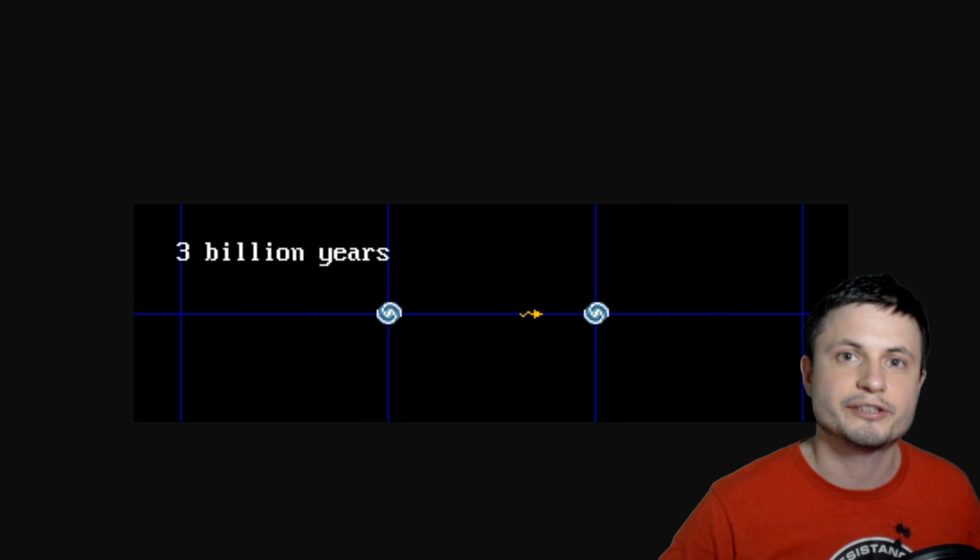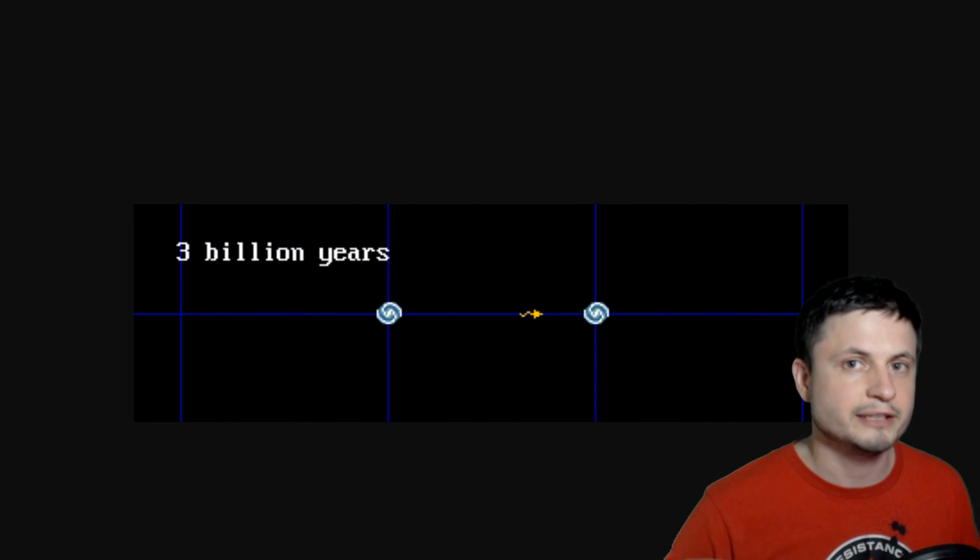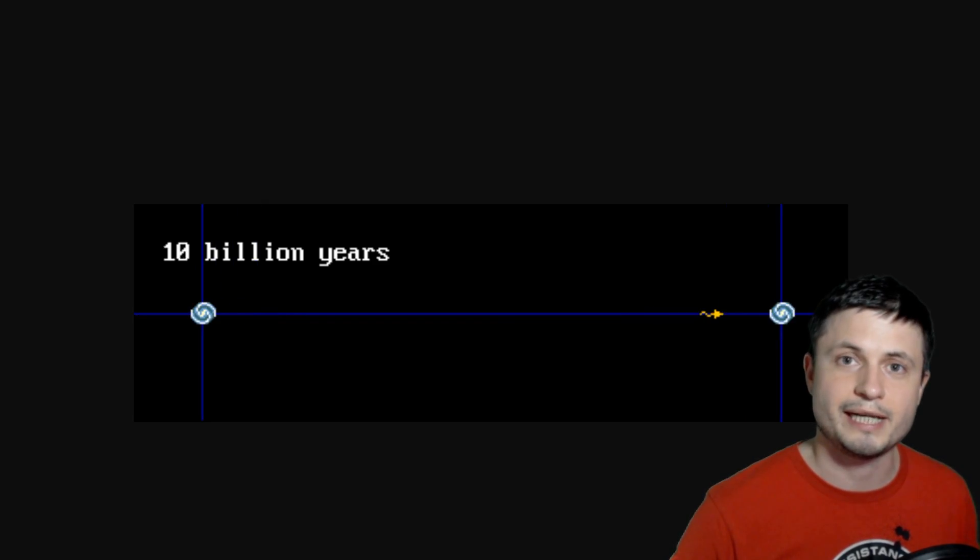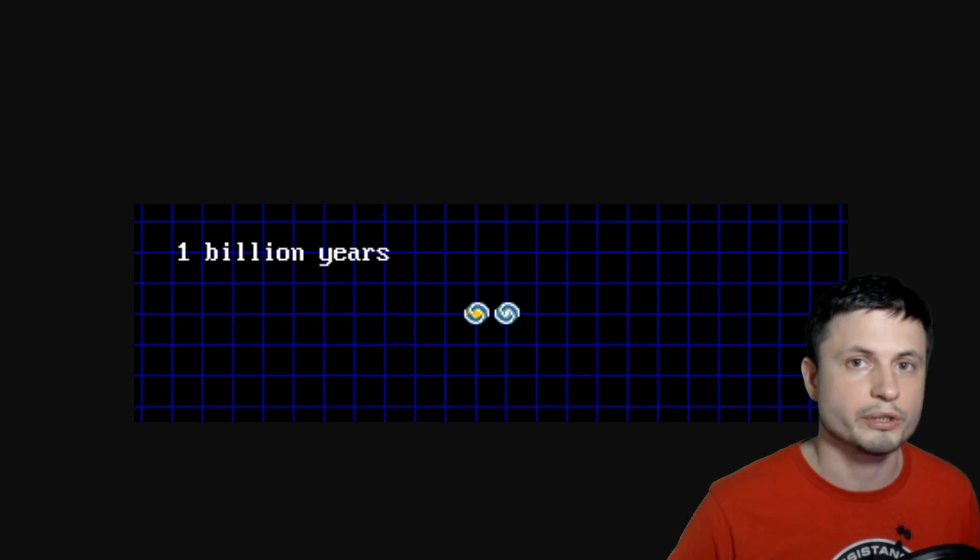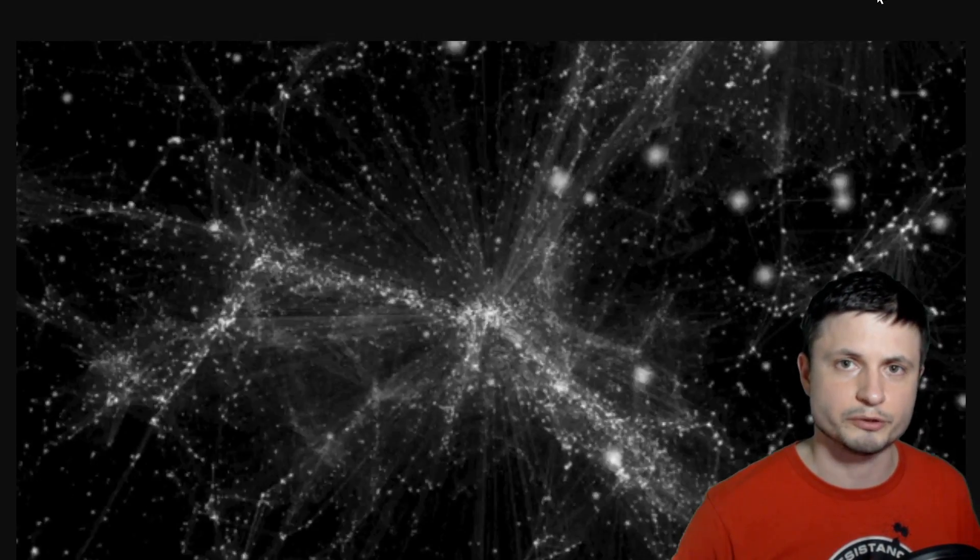And so in that sense, space itself is allowed to travel faster than the speed of light. It doesn't violate any physical laws, and it's allowed to do a lot more than that. And so that's example number one. The space is allowed to have superluminal speeds.